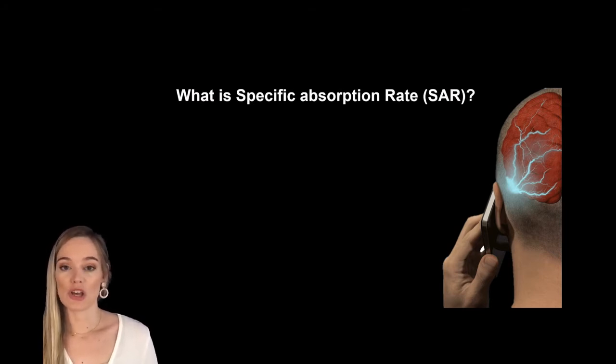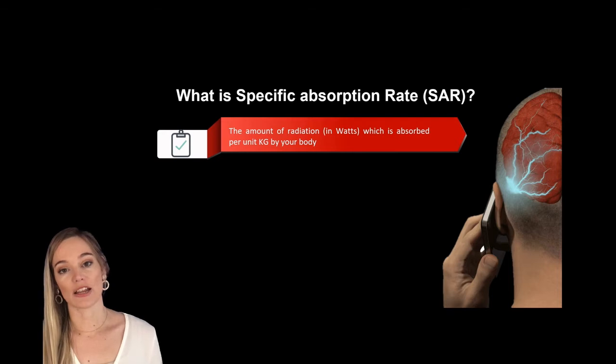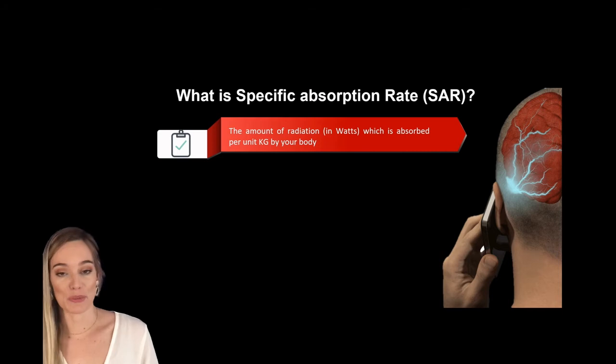So this is where the specific absorption rate comes in. This is basically a measurement of the amount of radiation in watts that your body absorbs per unit kilogram of your body.